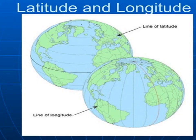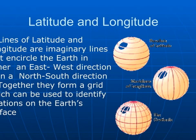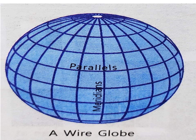Here we can see pictures of both latitudes and longitudes. All lines of longitudes are the same length. There is one other important line of longitude besides the prime meridian — the international date line, which is the 180 degree line in both directions. Lines of latitude and longitude are imaginary lines; together they form a grid used to identify directions on the earth's surface. Parallels and meridian lines form a network, which can also be known as a wire globe.